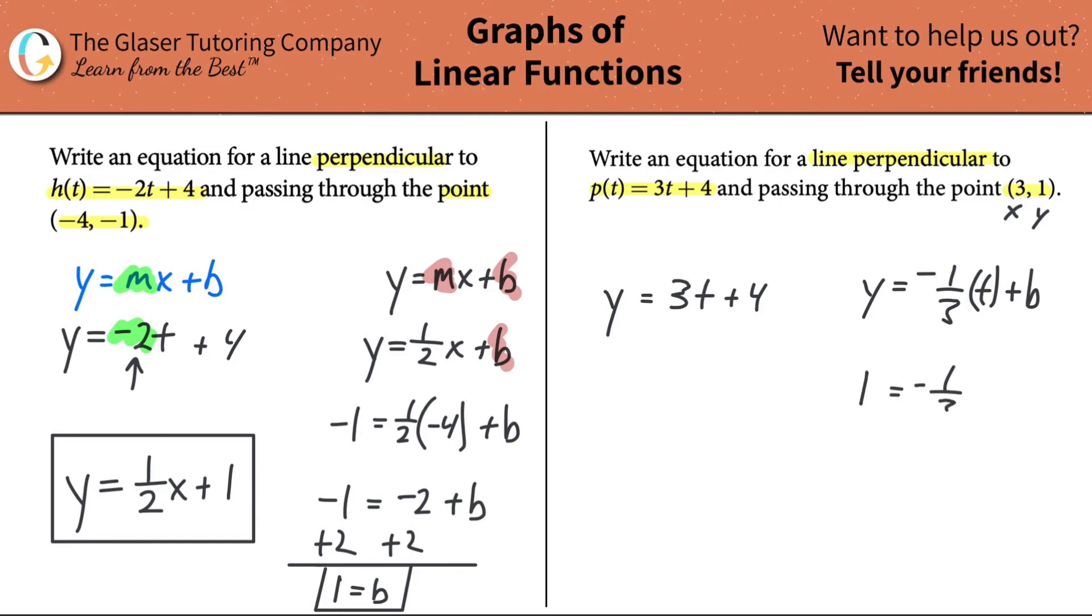Negative 1/3 times our... this is t here, because t is like the x. This has the form y = mx + b. The t is just the unknown, so it doesn't matter if you call it t or x, just as long as you plug it in right. So the 3 here will get plugged in for t plus our y-intercept, which we don't know. We love this because we can solve.